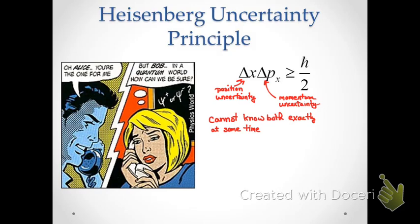If we know the exact position of a particle — let's say delta x equals zero, meaning we know exactly what the position is — the only way to satisfy the uncertainty principle is for the uncertainty in momentum to be infinite, meaning we can know absolutely nothing about momentum. So if we know one exactly, we can't know anything about the other.